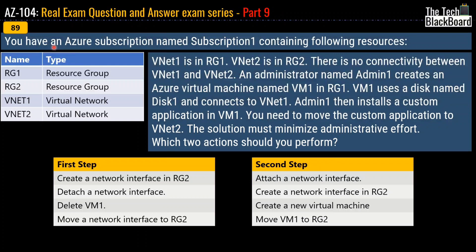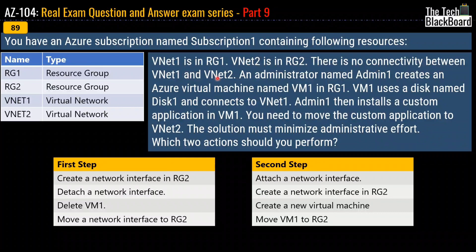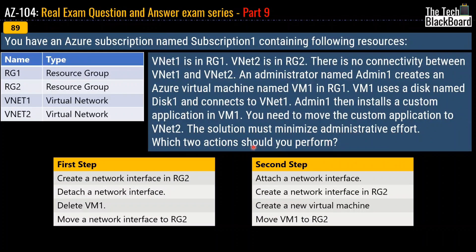Reaching question number 89: you have an Azure subscription named Subscription 1 containing the following resources. In the table you can see RG1 and RG2 which are resource groups, and VNet1 and VNet2 which are virtual networks. VNet1 is in RG1, VNet2 is in RG2, and there is no connectivity between them. An administrator named Admin1 creates a virtual machine named VM1 in RG1. VM1 uses a disk named Disk1 and connects to VNet1. Admin1 then installs a custom application in VM1. You need to move the custom application to VNet2, and the solution must minimize administrative effort. Which two actions should you perform?